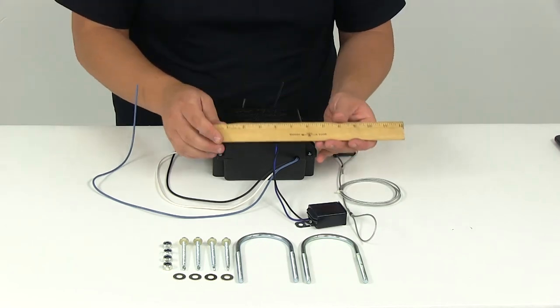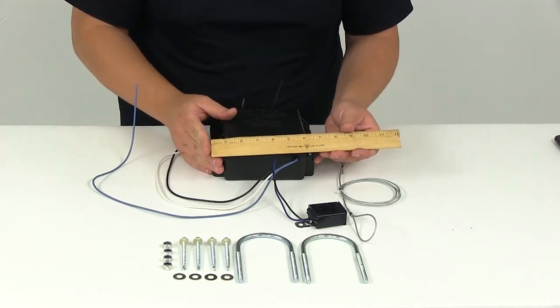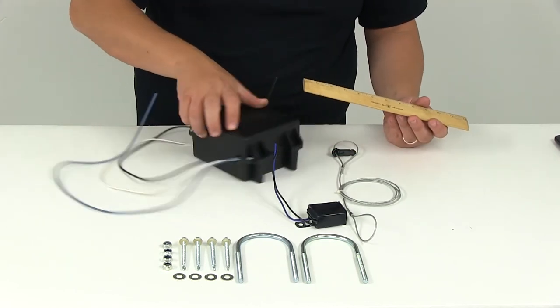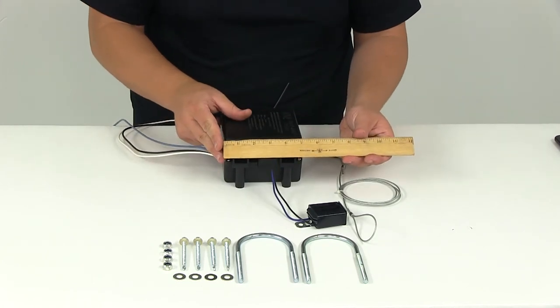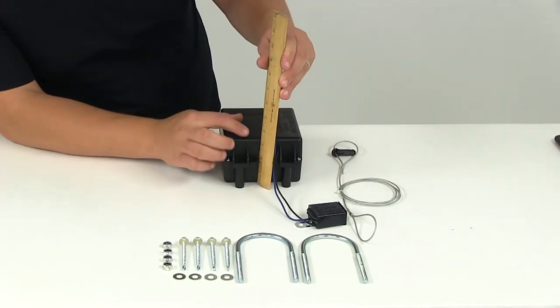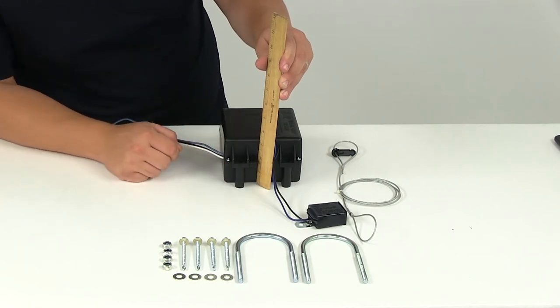The battery box overall width is about seven inches. The overall depth measures about five inches, and our overall height measures right around three inches.